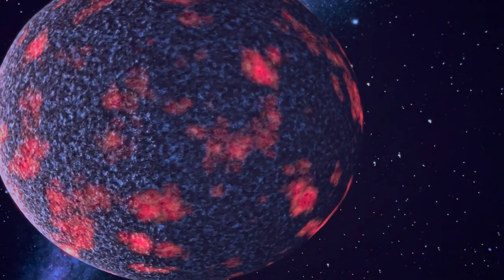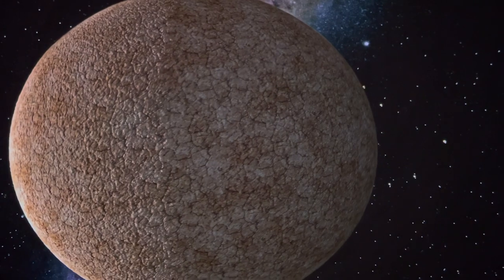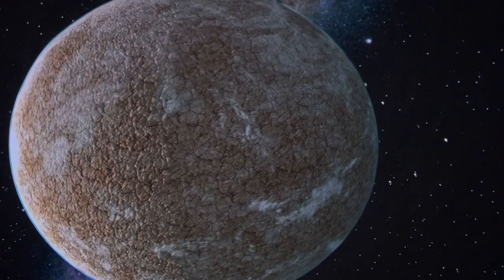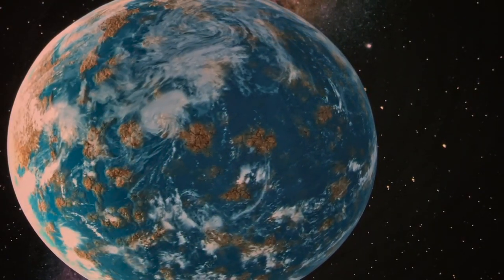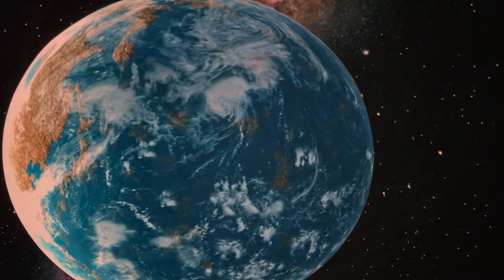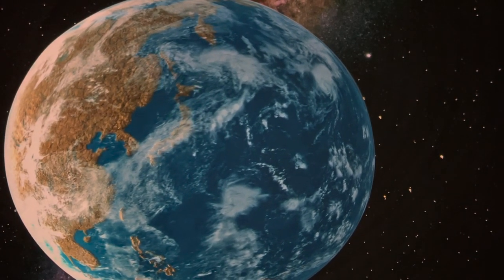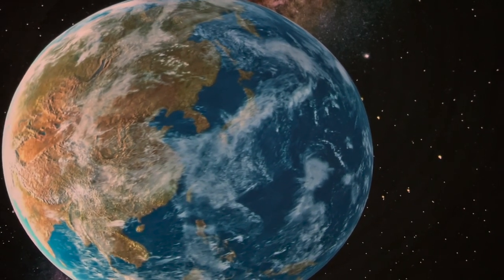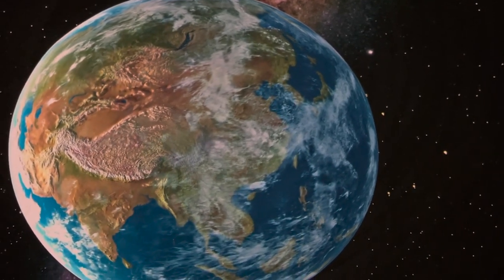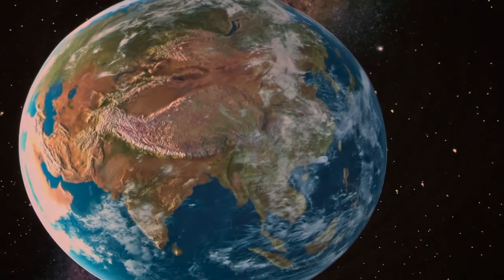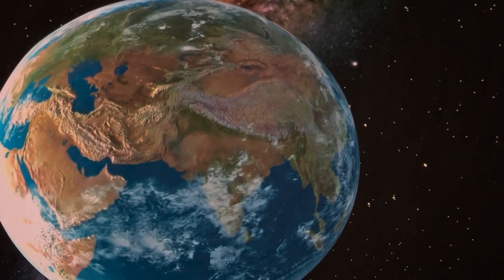The solar system started condensing about four and a half billion years ago. A couple hundred million years later, the Earth had appeared. After another three hundred million years, the atmosphere and the oceans had covered Earth. Another five hundred million years passed and some primitive forms of life appeared, such as blue-green algae. Another five hundred million years, and bacteria and simple plants had arrived. Then, over billions of years, more and more complex organisms evolved, first in the sea and later on land.